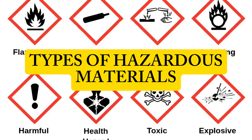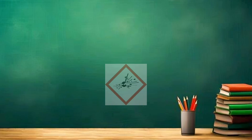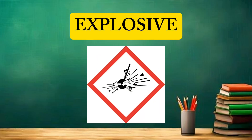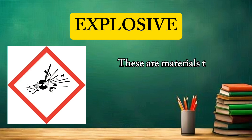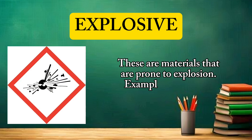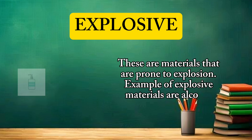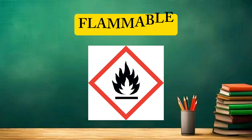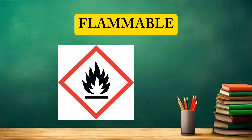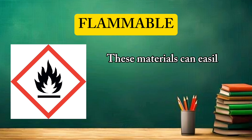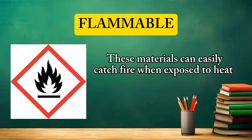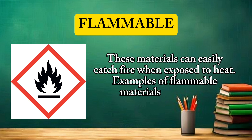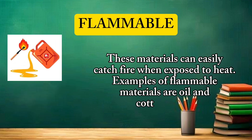Types of hazardous materials. Explosive: these are materials that are prone to explosion. Examples of explosive materials are alcohol and defective batteries. Flammable: these materials can easily catch fire when exposed to heat. Examples of flammable materials are oil and cotton cloth.